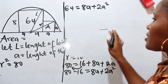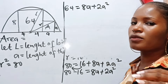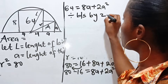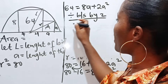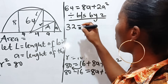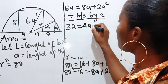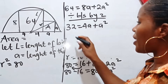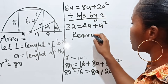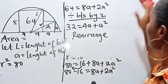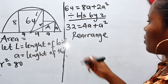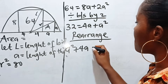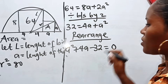We can divide through by 2 to simplify the equation. Dividing both sides by 2: 64 divided by 2 gives 32, 8 divided by 2 gives 4, and 2 divided by 2 is 1. Rearranging, we have A squared plus 4A minus 32 equals 0.